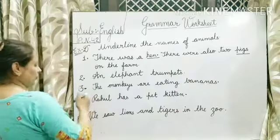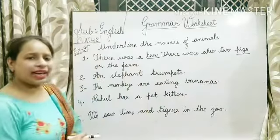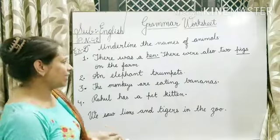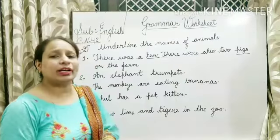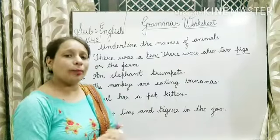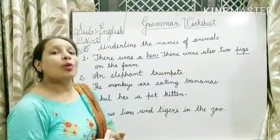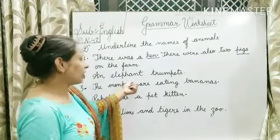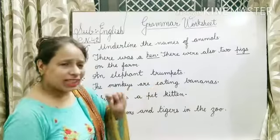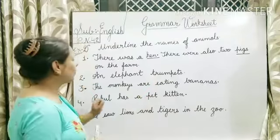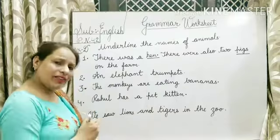Coming to the second one. An elephant trumpets. Ek elephant chinghaad raha hai — trumpet karta hai. Jaise dog bark karta hai, cat mew karti hai, cow moo karti hai, aise hi jo elephant hota hai woh trumpet karta hai. Toh yahan pe animal kya hai — elephant. So elephant ke niche underline karna hai.